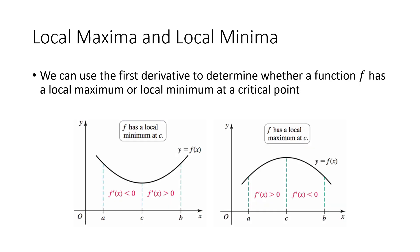We can use the first derivative to figure out whether, when we have a critical point — in this case points where the slope is zero — we have a local maximum or local minimum value. At this point c we've got a horizontal tangent line, and at this other point c we've got another horizontal tangent line.